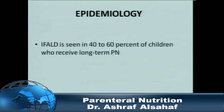Regarding epidemiology, TPN is used in the pediatric age group, preterm age group, and also adults. But the more immature the liver, the more complications will happen. In pediatric or newborn children, 40 to 60 percent of those who stay on TPN for some time develop complications. In adults, the range goes from 15 to 20 percent, and the rate of complications is less in adults compared to the pediatric population.